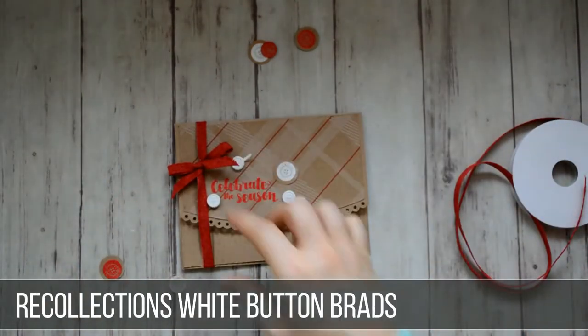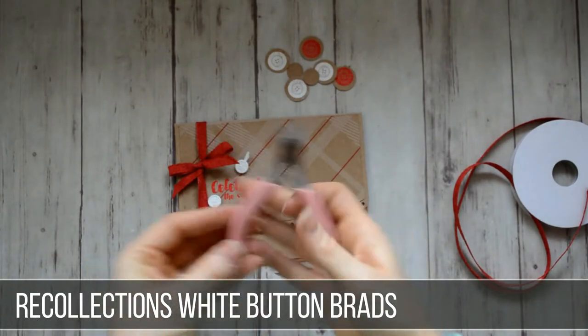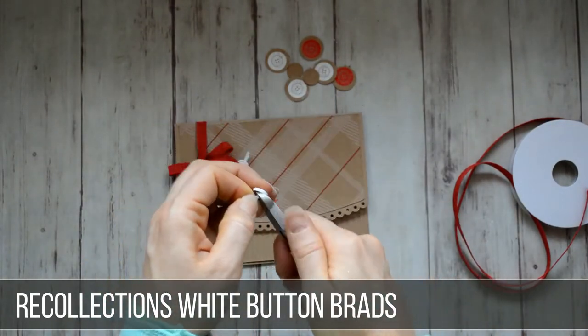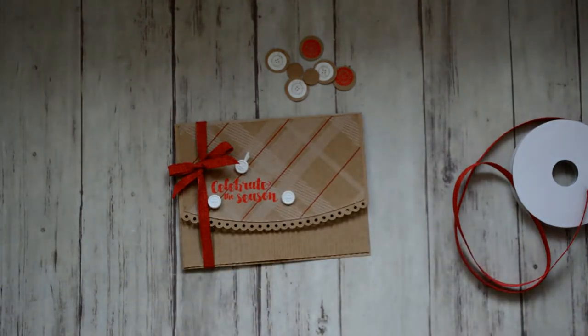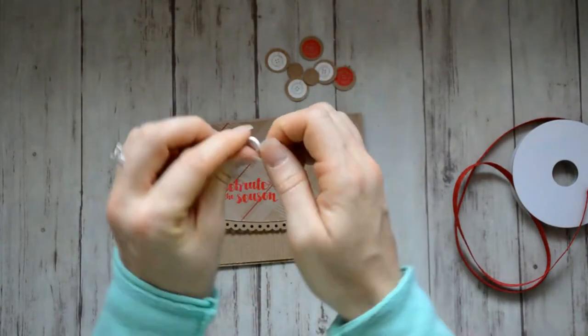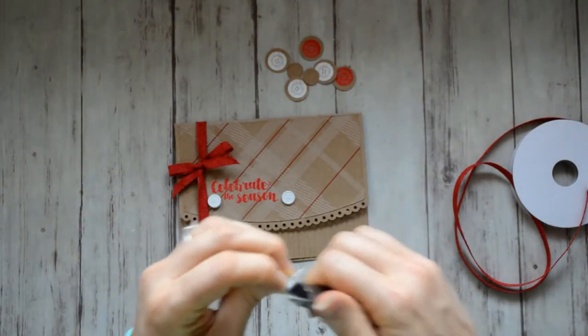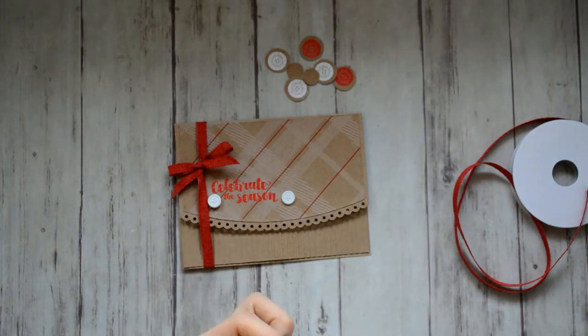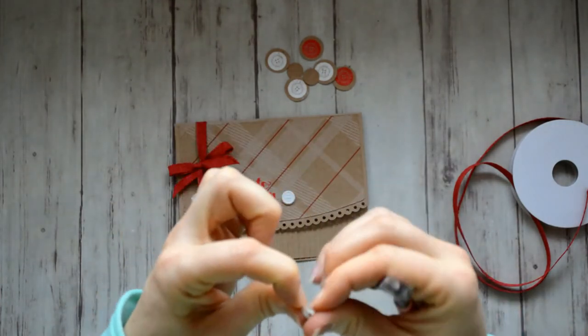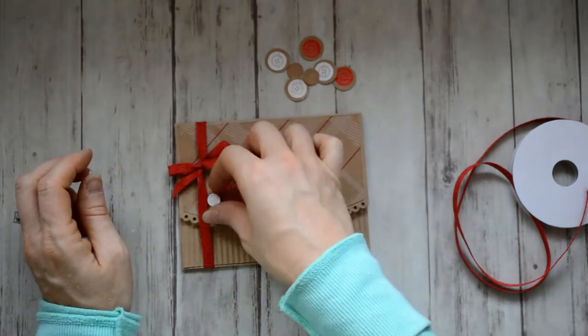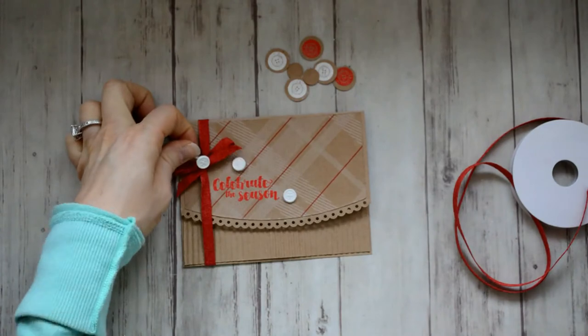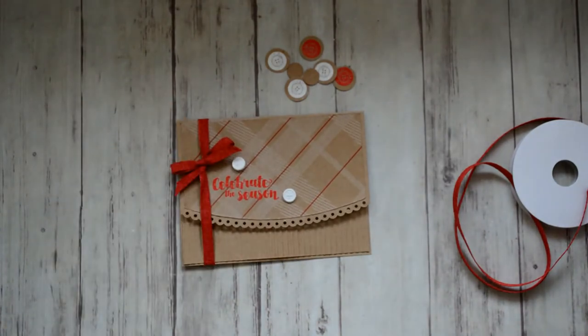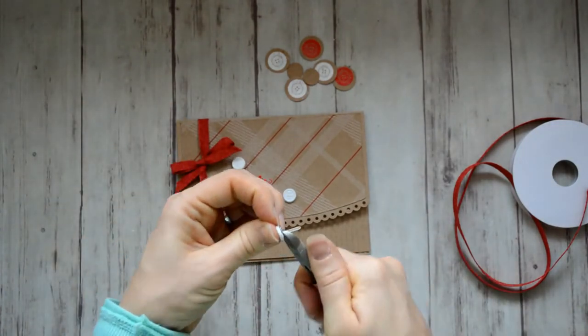So here are the little white button brads. And I just cut the back prongs off using some jewelry pliers. And I actually was making this card for a sketch. And so that's why I arranged these brads like that. Otherwise, I probably wouldn't have done that.